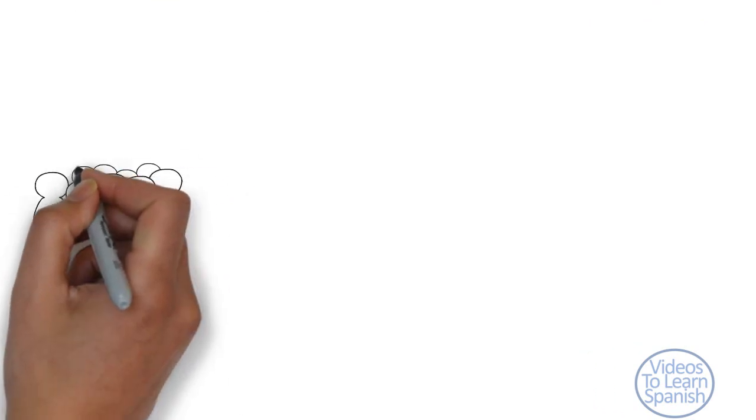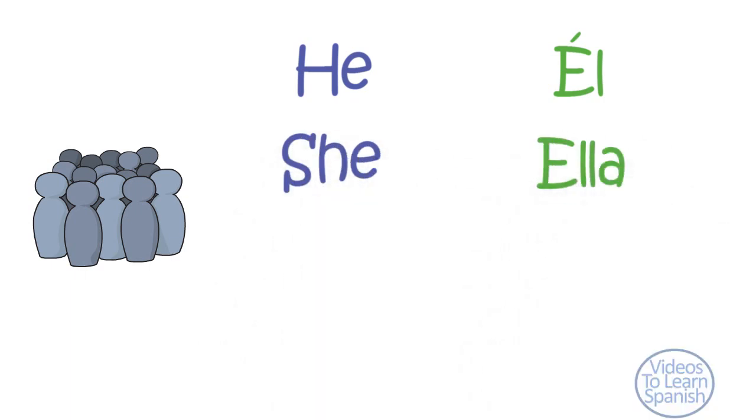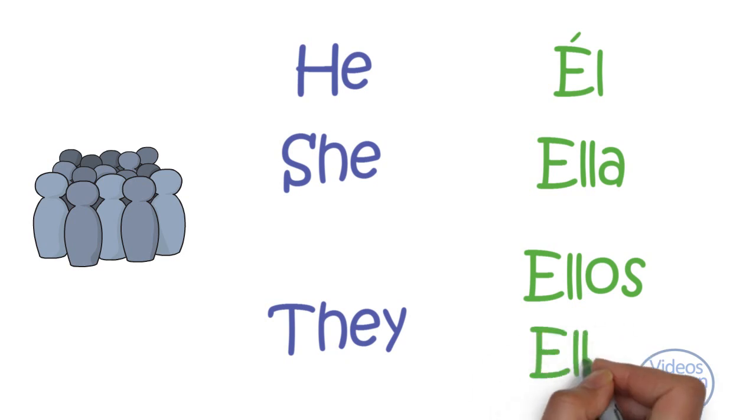When the speaker refers to a third person, both English and Spanish differentiate between masculine and feminine in the singular. He is el and she is ella. Spanish has also two forms for the plural, ellos for the masculine and ellas for the feminine.